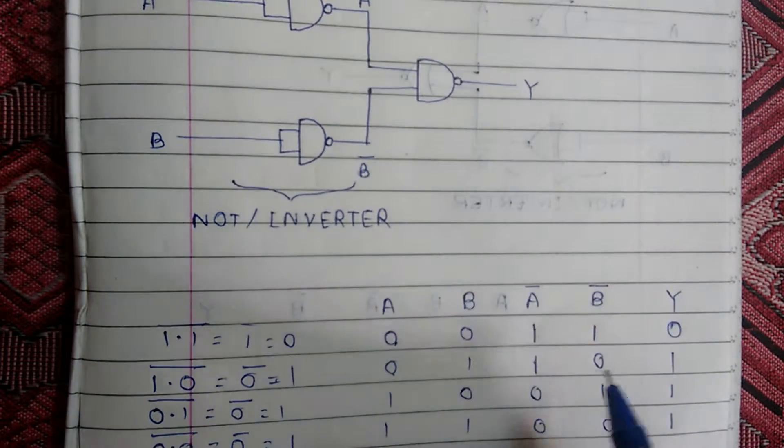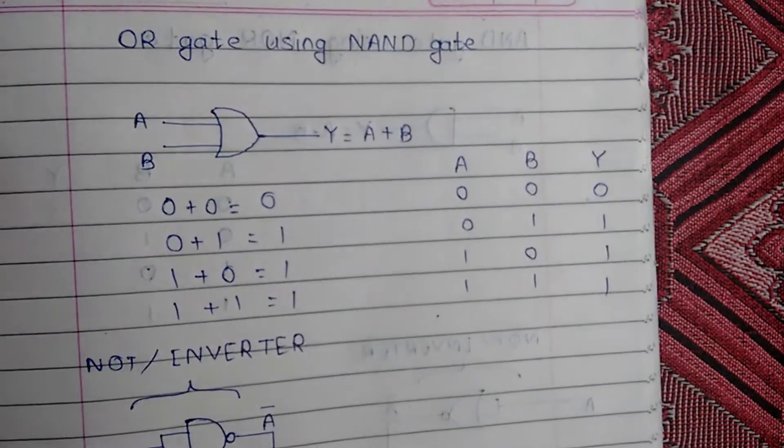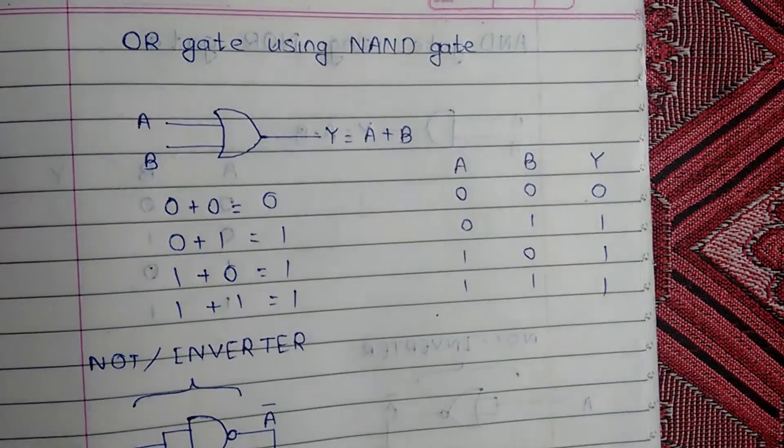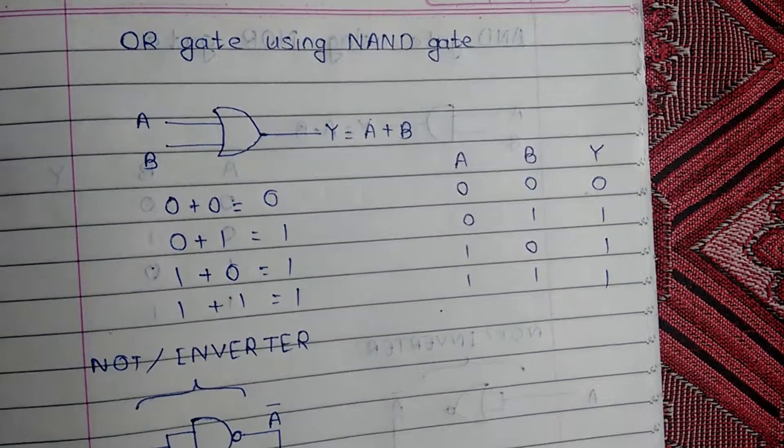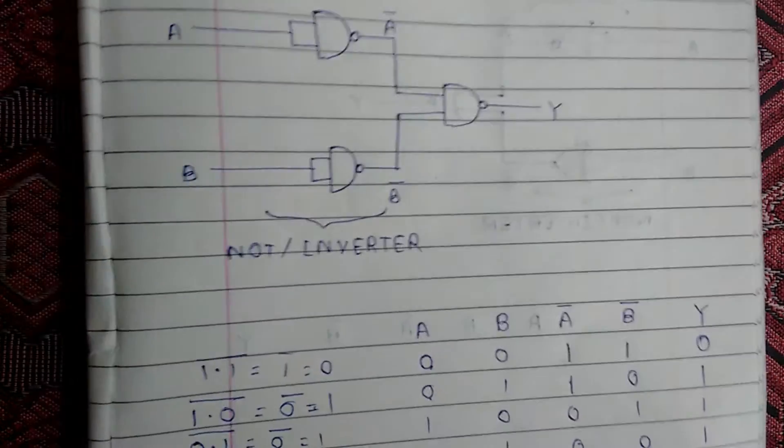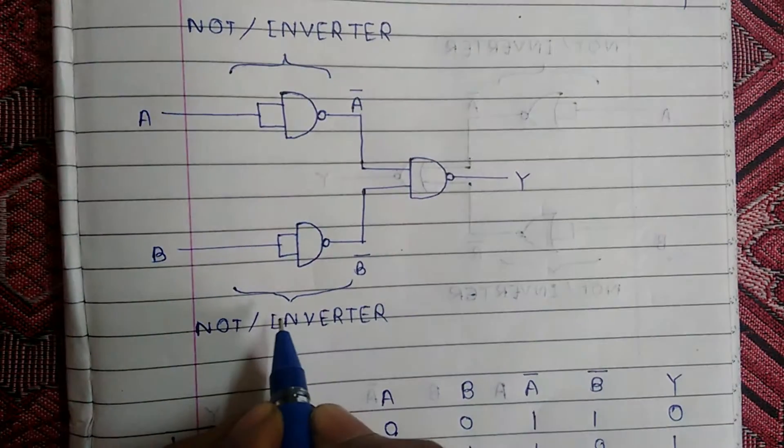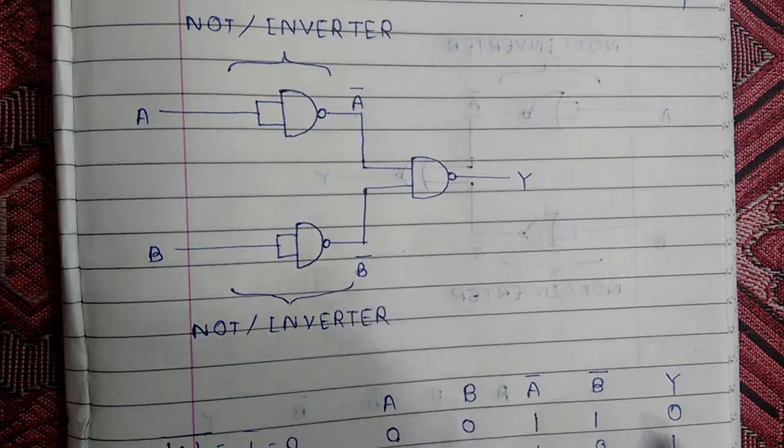So if you compare this truth table with this truth table, then you will find that we have constructed our OR gate using NAND gates. In this way, we have constructed an OR gate using NAND gates.